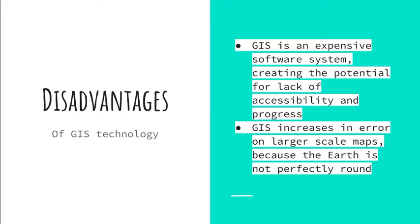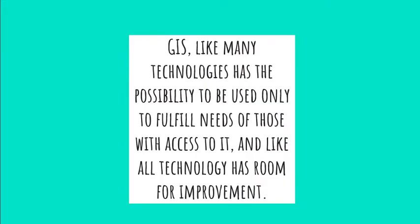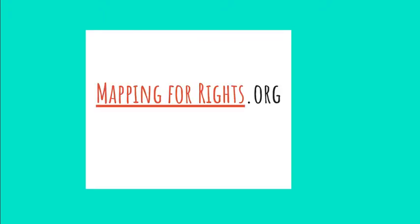Of course, with all technologies there are some disadvantages. GIS is an expensive software system, which is one reason I haven't walked you through it today — there are discounts for students, nonprofits, and businesses, but it's still expensive. This creates the potential for lack of accessibility in different populations, which I'll discuss later in relation to the Rainforest Foundation. Another disadvantage is increased error on larger-scale maps because the earth is not perfectly round, yet GIS creates an overlay as if it is. Like many technologies, it has the possibility of being used only to fulfill the needs of those with access to it, and it has room for improvement.